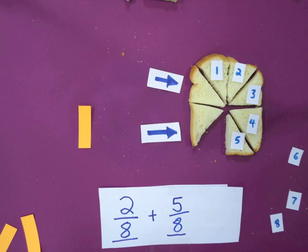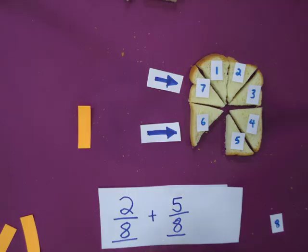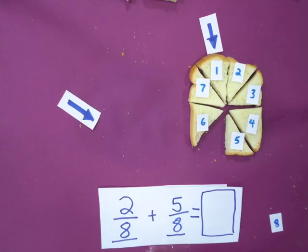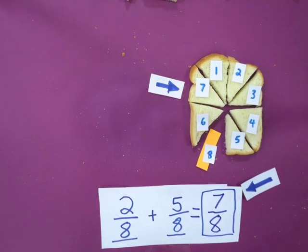In the end, we can count one, two, three, four, five, six, seven slices. Out of eight possible spots, our sum of two eighths plus five eighths is seven eighths.